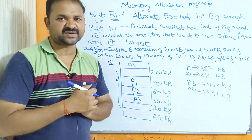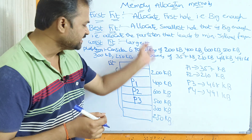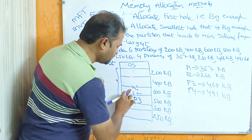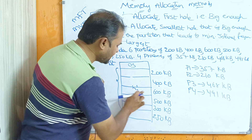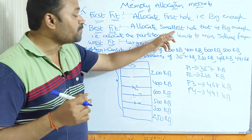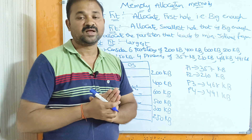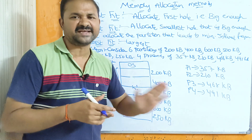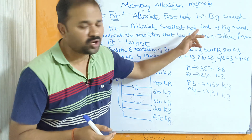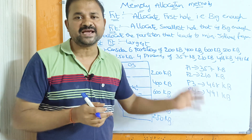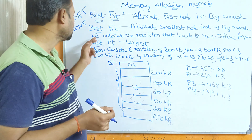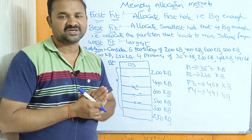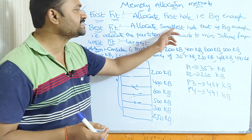That is about first fit. Now let us store these four processes in the six partitions using best fit. Best fit means: allocate the smallest hole that is big enough. We have to scan all the partitions and allocate the smallest partition that fits, leading to minimum internal fragmentation.